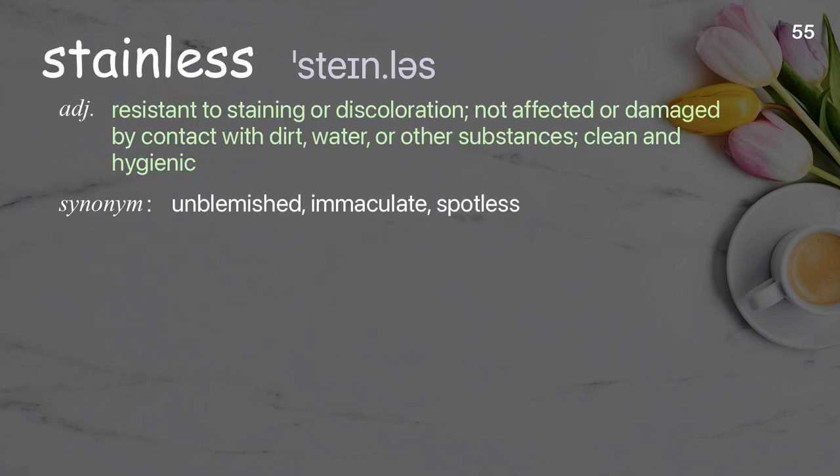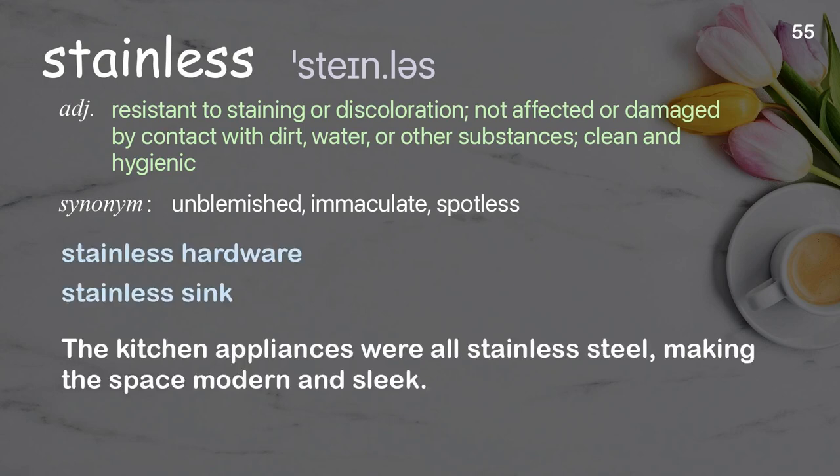Stainless: resistant to staining or discoloration; not affected or damaged by contact with dirt, water, or other substances; clean and hygienic. Examples: stainless hardware, stainless sink. The kitchen appliances were all stainless steel, making the space modern and sleek.